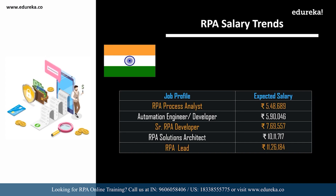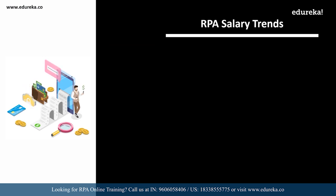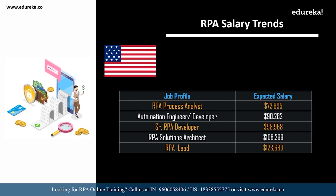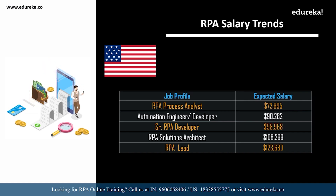For the same roles in the USA: an RPA process analyst can expect around 72,000 dollars; an automation engineer around 90,000 dollars; a senior RPA developer around 98,000 dollars; an RPA solutions architect around 100,000 dollars; and an RPA lead around 123,000 dollars. These are significant salaries, making this a great time to start your career in RPA.